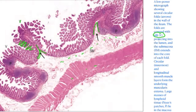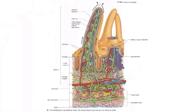Large masses of lymphoid tissue forming Peyer's patches lie in the mucosa. The crypts of Lieberkühn represent invaginations, and this is the structure of a villus showing how absorption takes place.